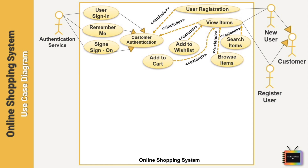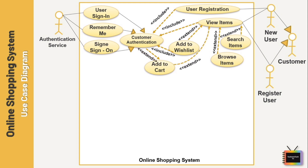The extend relation is represented by a dashed arrow pointing toward the base use case with the notation «extend». Customer Authentication is included in Add to Wish List because it requires the customer to be authenticated. Items can be added to the shopping cart without user authentication, so I have added an extended relationship there. The View Items use case can be used as a top-level use case if the customer only wants to find and see products, or it can also be used as part of the Make Purchase use case.